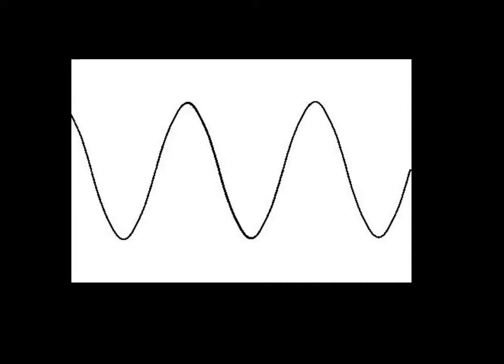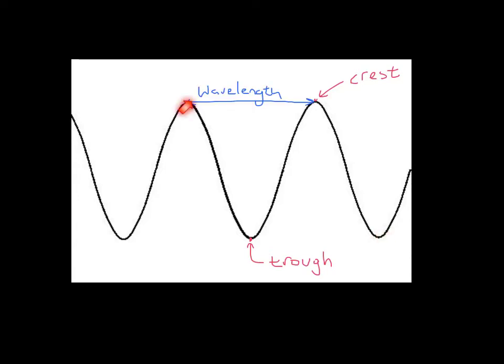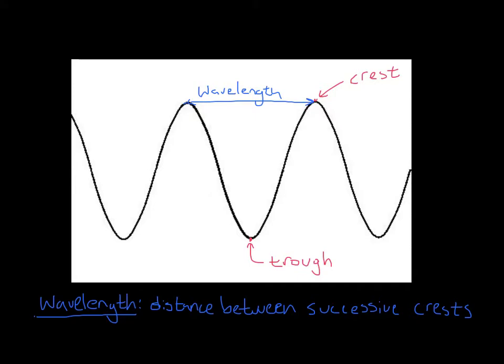Let's label a couple pieces on this wave. The high points, or the highest points on the wave, are called the crest, and the lowest points are called the trough. The distance between two successive peaks, or two successive crests, is called the wavelength. And so the definition of a wavelength is the distance between two successive crests.